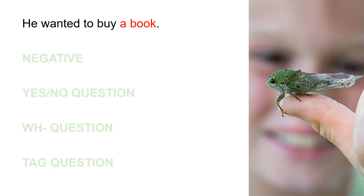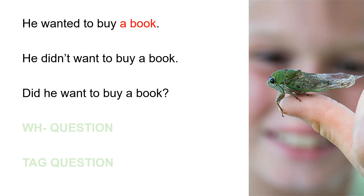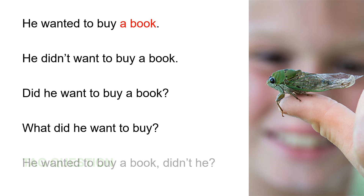He wanted to buy a book. Negative: He didn't want to buy a book. Yes/no question: Did he want to buy a book? W.H. question: What did he want to buy? Tag question: He wanted to buy a book, didn't he?